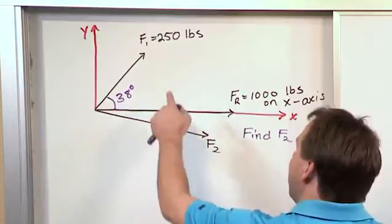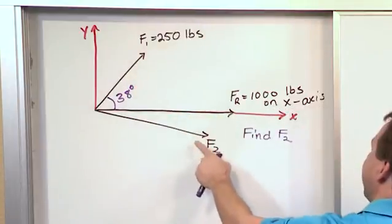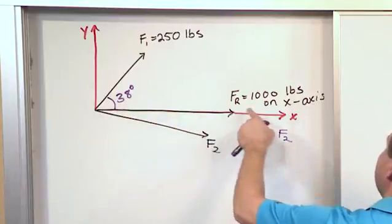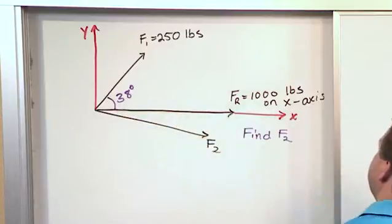And what we're trying to do is figure out what must F2 be in order to make this the case. In other words, if we have vector F1, what does F2 have to be in order to give us a result that lies completely along the x-axis and has a magnitude of 1,000 pounds?